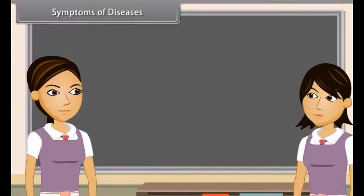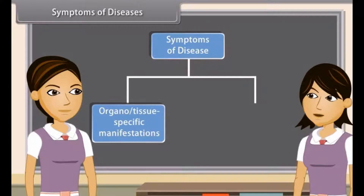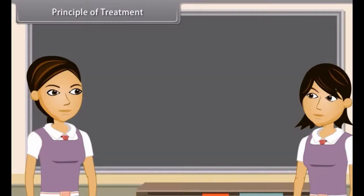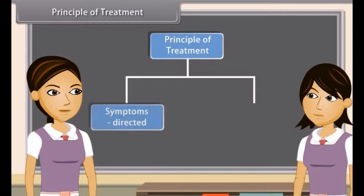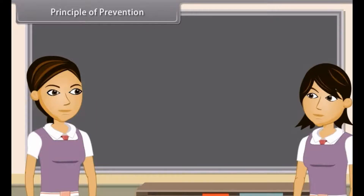Disease symptoms are of two types: organ or tissue specific manifestations and common manifestations. The principles of treatment of various diseases are symptom directed and pathogen directed.